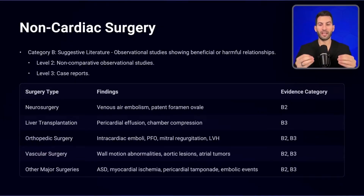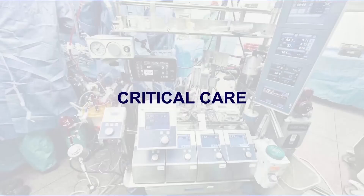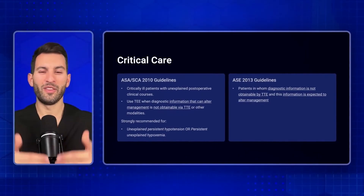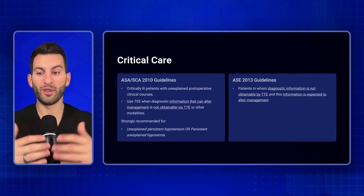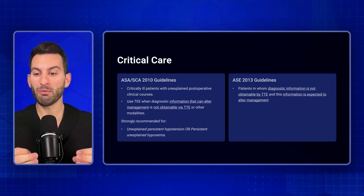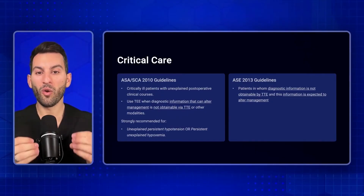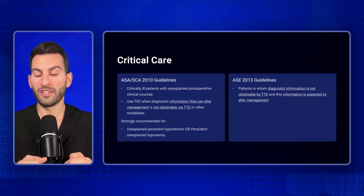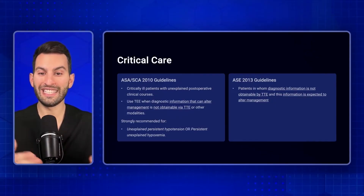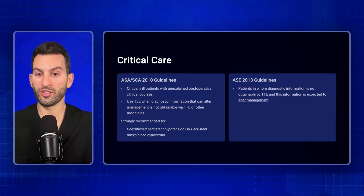The final category is the critical care setting. There's a specific recommendation and a vague one. The specific recommendation is for unexplained persistent hypotension or hypoxemia. The vague recommendation is if you need to evaluate the heart and can't obtain the information you need with TTE, and this information would alter your management, then TEE is indicated.